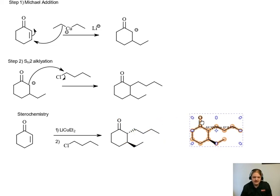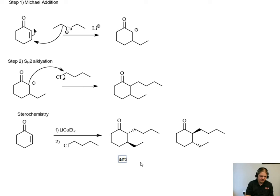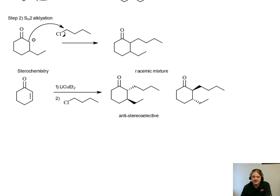This reaction is stereoselective. We get this trans arrangement. And because the molecule is the reactant is achiral, we do get the racemic mixture. So we get both enantiomers of the product. So let's talk about where this stereoselectivity comes from.